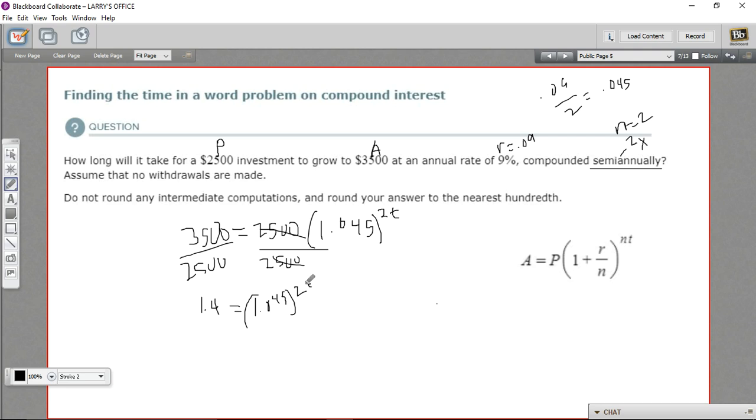So the next thing we want to do to solve this when we have a variable in the exponent is to take the log of both sides. If we do that, we'll get the log of 1.4, and over here we'll get the log of 1.045 to the 2t. The reason we do this is because the properties of logs allow us to take this exponent and move it out in front and multiply it. So we'll do that next. So that'll give us the log of 1.4 on the left, and on the right we're going to get 2t times the log of 1.045.